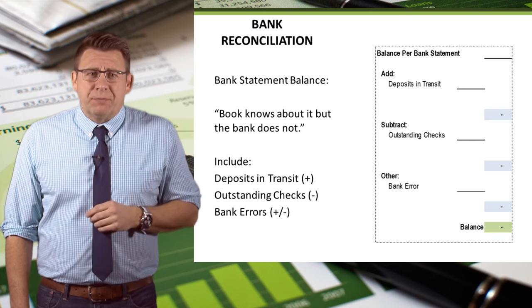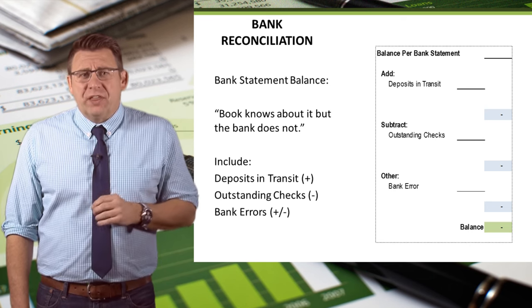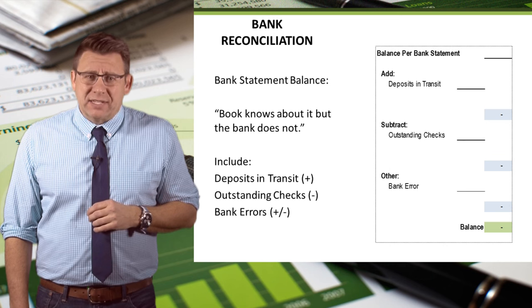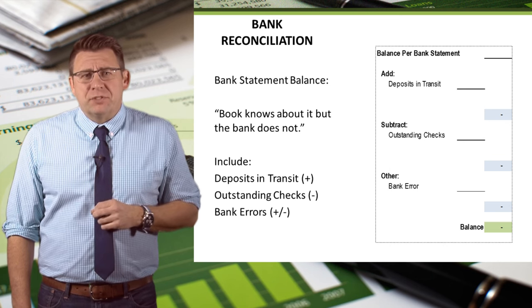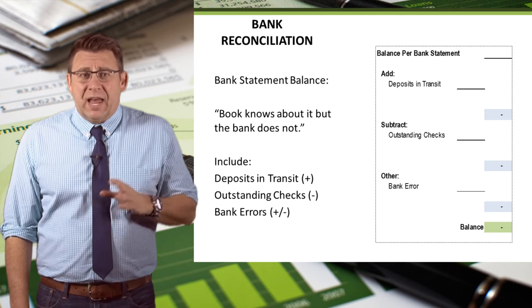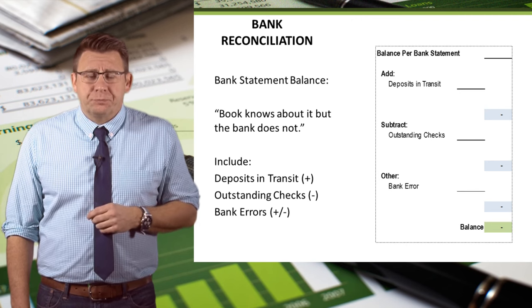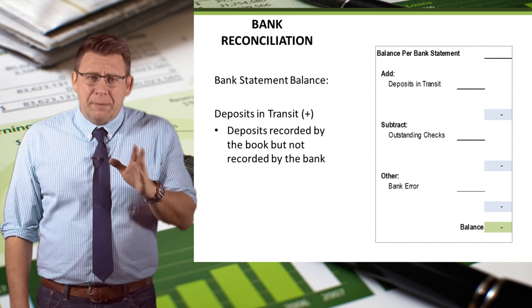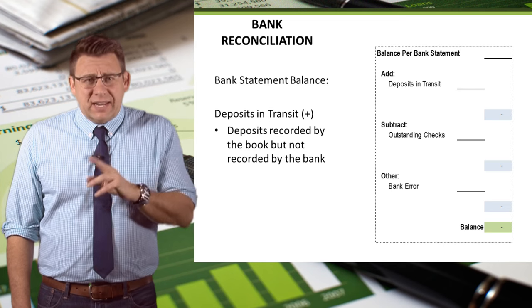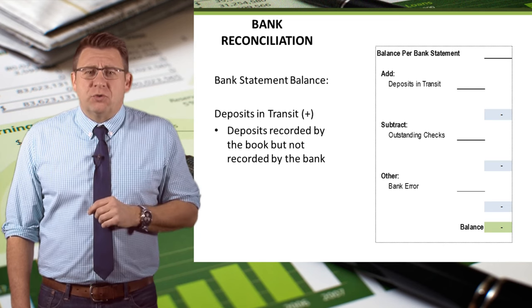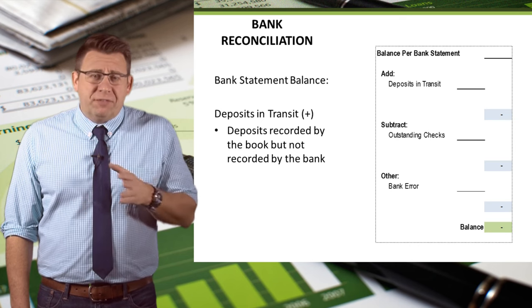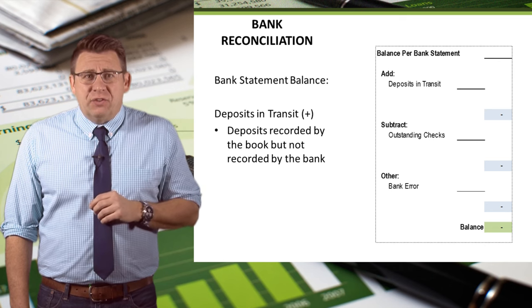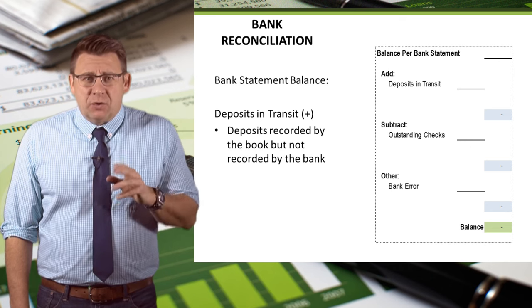To determine if something reconciles the bank side, think of it this way: it is stuff the book knows about, but the bank does not. The three most common items are deposits in transit, outstanding checks, and bank errors. Deposits in transit are receipts that the company has recorded — a debit to cash — and sent to the bank to be deposited, but the bank hasn't recorded them yet. This could happen if the end of the month falls on a weekend. They are added to the bank statement balance in the reconciliation process.